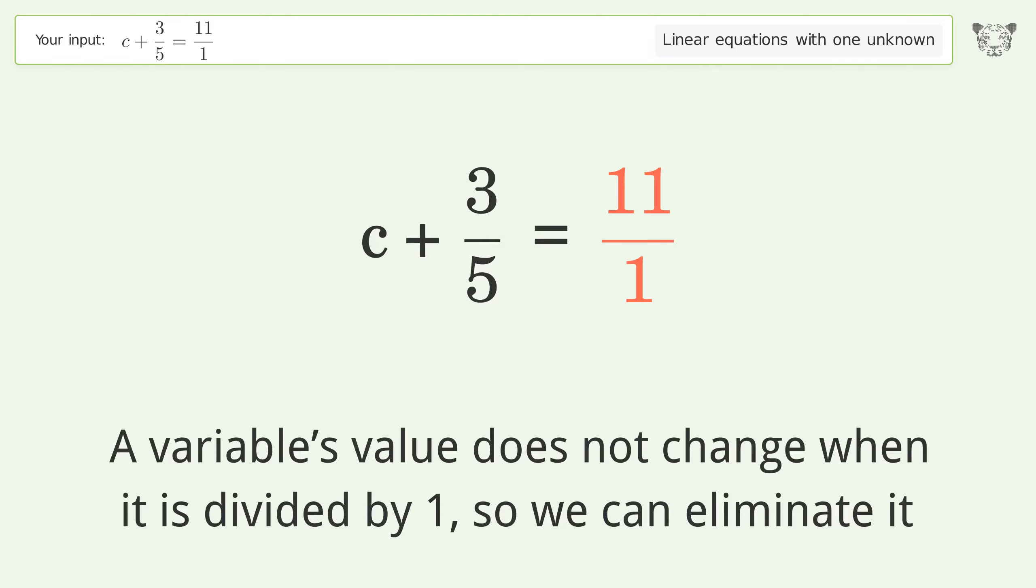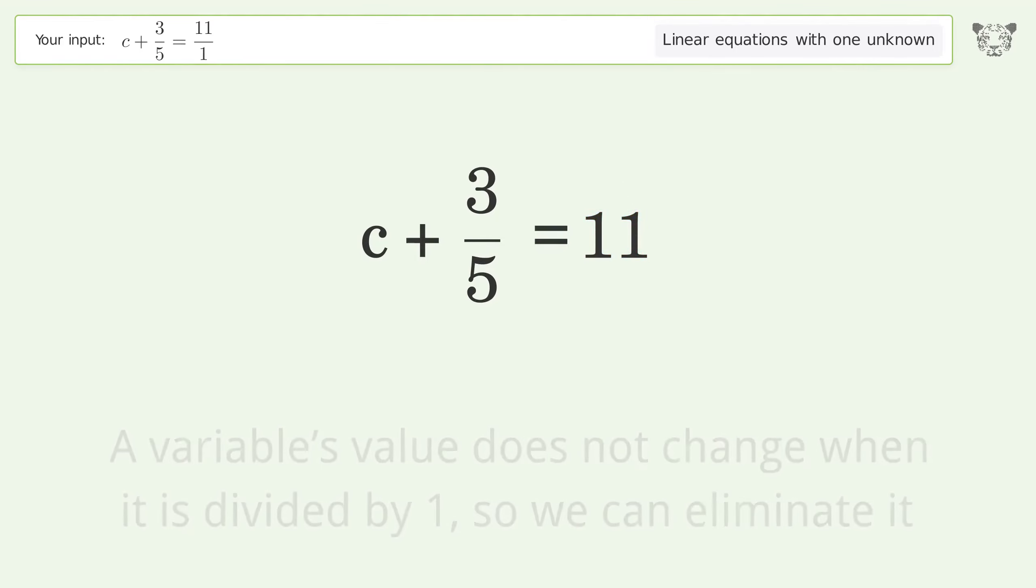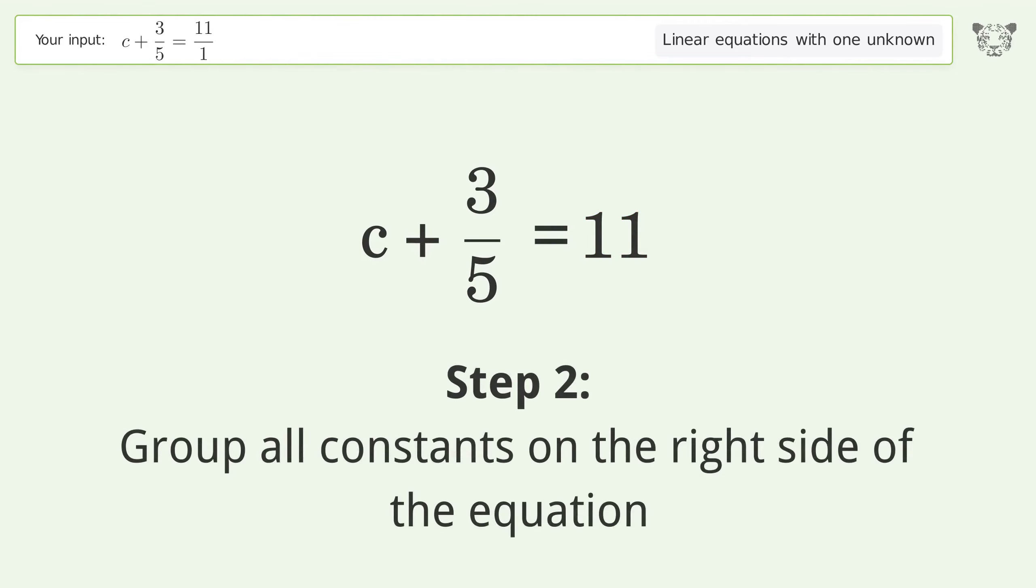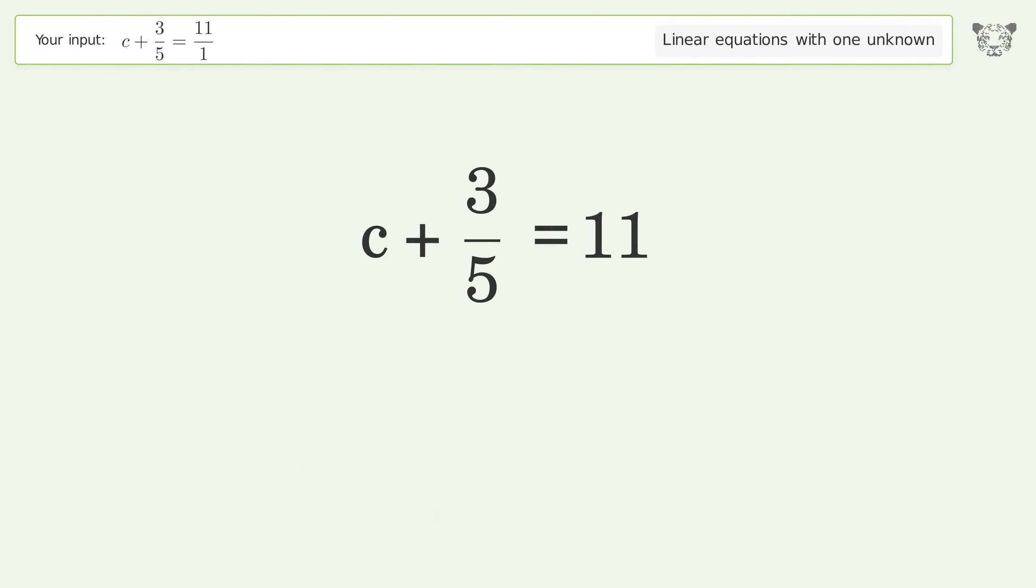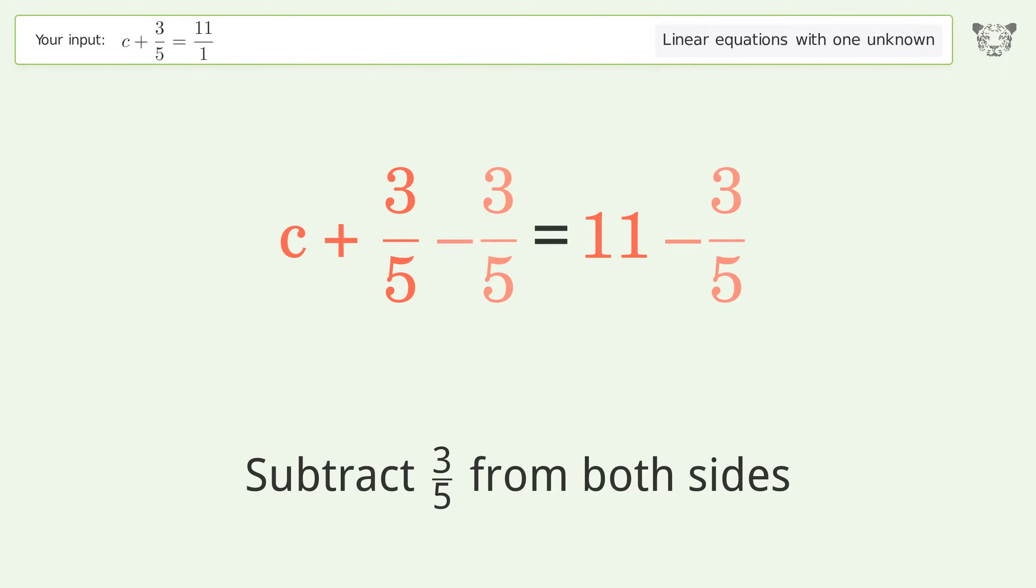So we can eliminate it. Group all constants on the right side of the equation. Subtract 3 over 5 from both sides. Combine the fractions.